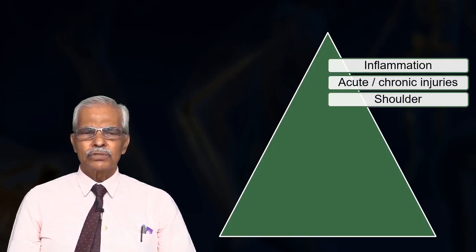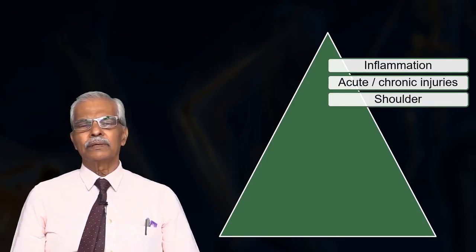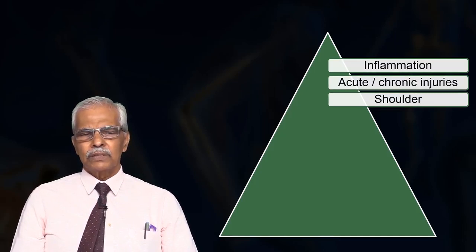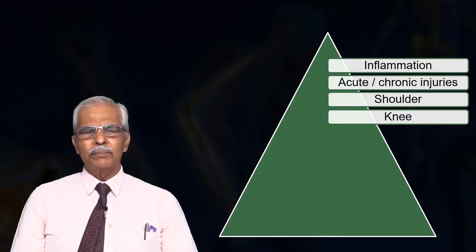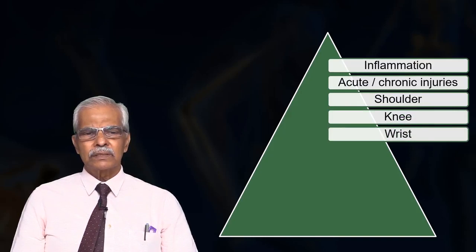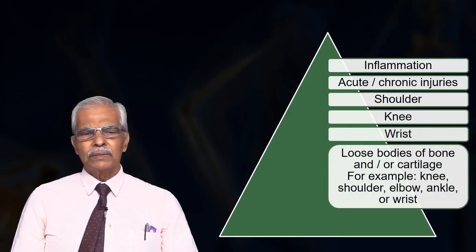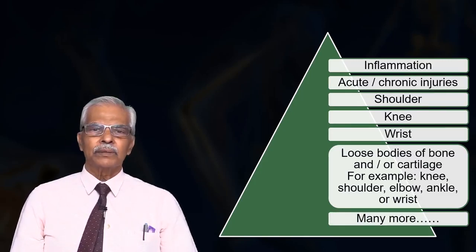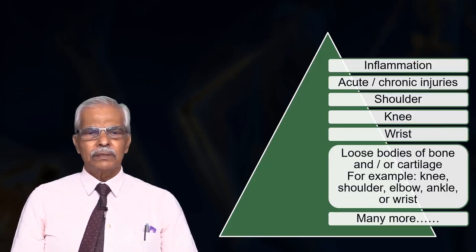Acute and chronic injuries like ligament tears can also be treated in the knee. The shoulder can be used to do recurrent dislocation repair, and cuff tears can be repaired successfully through the scope. In short, all shoulder surgeries nowadays can be done through the arthroscope. It can also be used for wrist and elbow — loose bodies can be removed, ligament reconstruction can be done in the elbow, and many more indications. Indications are all the time expanding, with more and more new surgeries being done by the scope.